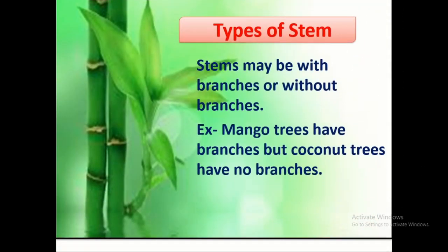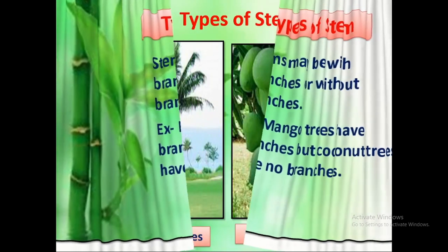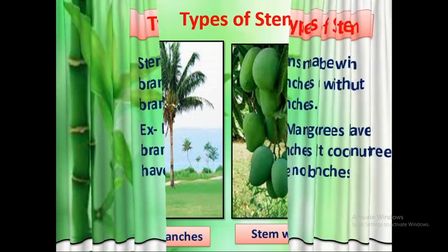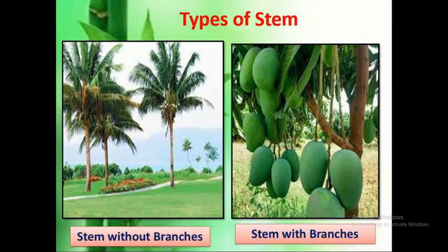The first type is stem with branches or stem without branches. The mango tree has many branches, but the coconut tree has no branches. In the first picture, the coconut is shown as an example of stem without branches. The mango tree is an example of stem with branches.